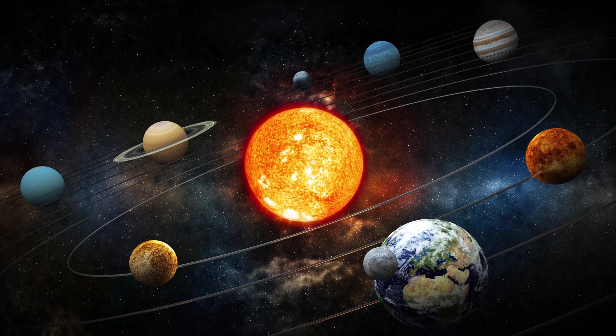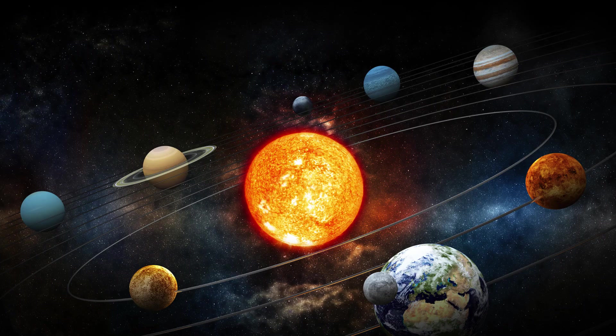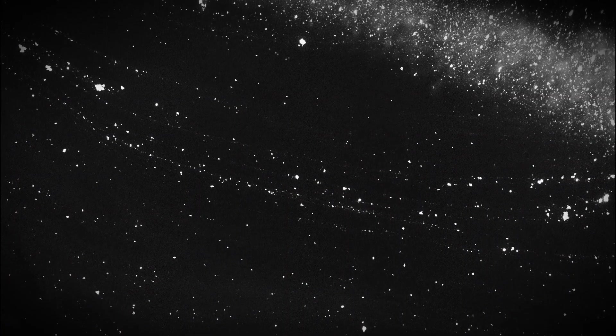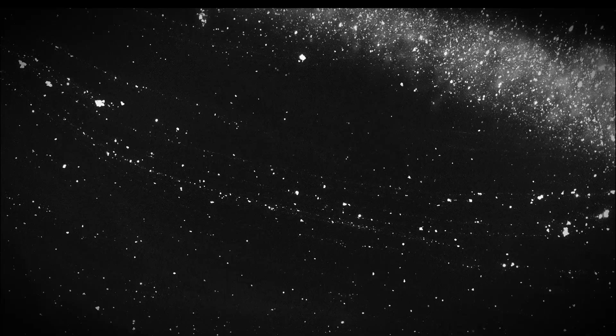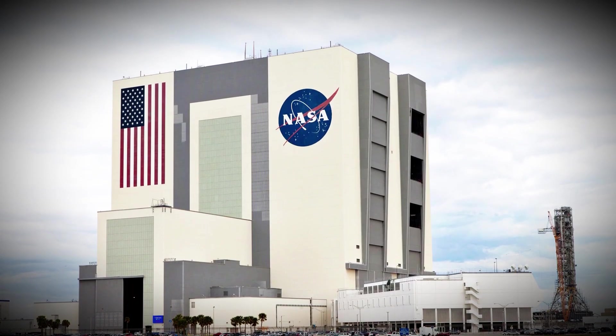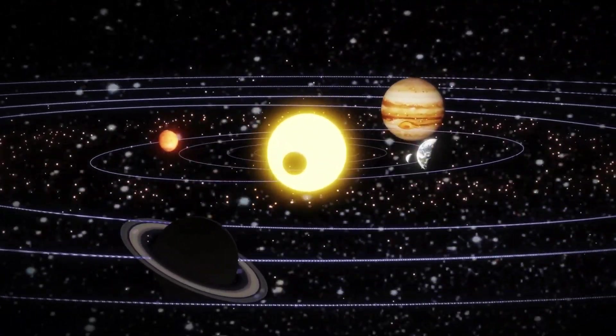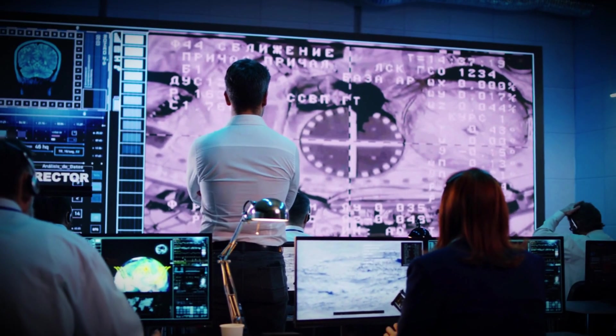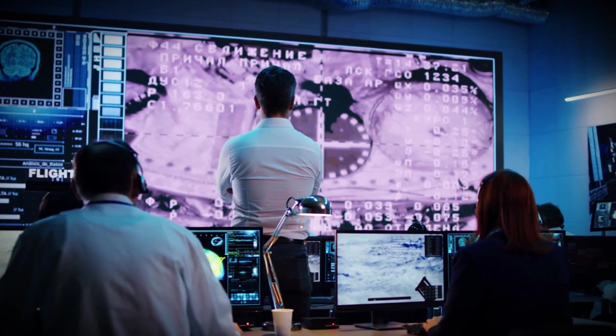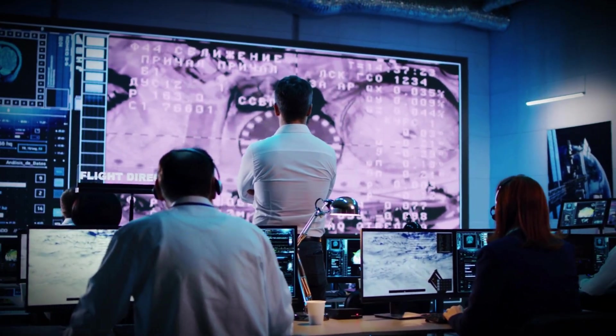In the 1970s, a rare alignment of the outer planets occurred, a phenomenon that happens only once every 176 years. NASA had to seize this opportunity, ensuring that at least one probe would reach the farthest reaches of the solar system. The world was fortunate, as both probes arrived exactly where scientists had planned.